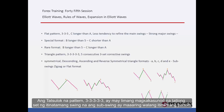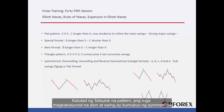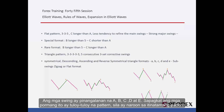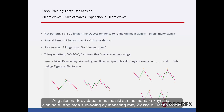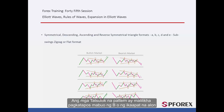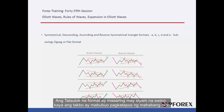Triangle pattern (3-3-3-3-3) has five consecutive three-set corrective swings. The sub-swings may not have a corrective pattern. Just like a triangle pattern, the consecutive waves and swings form symmetrical, descending, ascending and reversal symmetrical triangle formats. Swings are named A, B, C, D and E. Since these forms are continual patterns, they are present on corrective patterns. Wave B must be larger and longer than wave A. Sub-swings can have zigzag or flat format. Triangle patterns are created after B or the fourth wave is formed. The triangle format may have nine swings, thus the trend will form after a longer time.